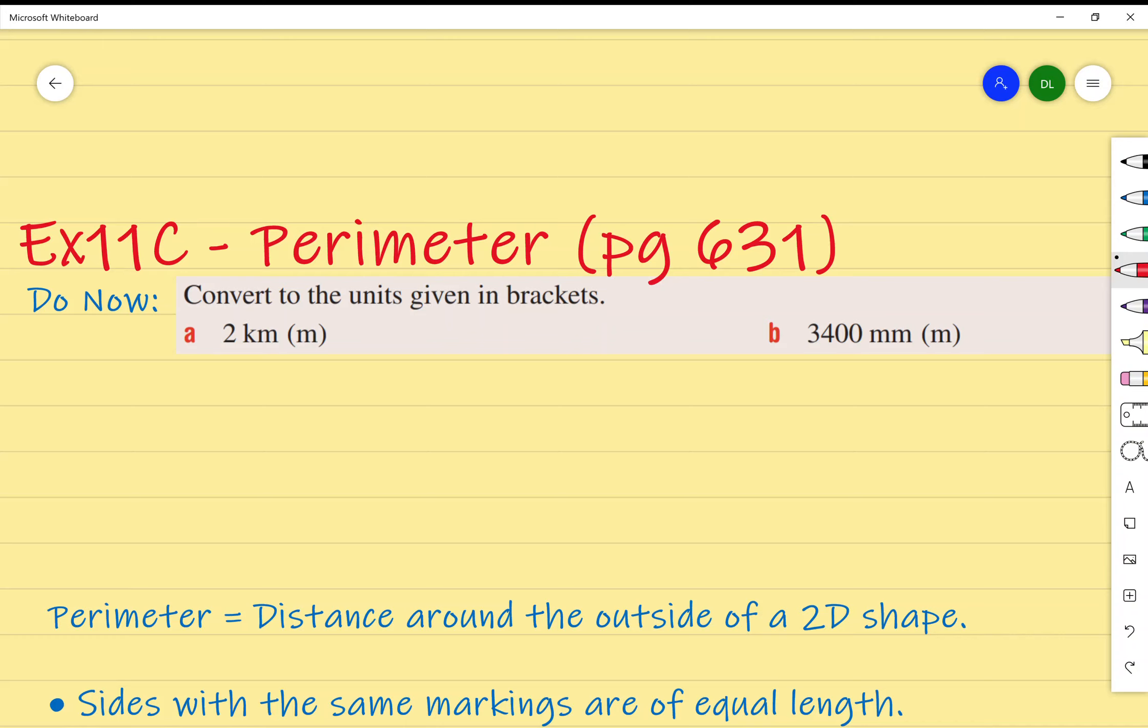Exercise 11C on perimeter, page 631 of your textbook. Last lesson we looked at exercise 11B, which is on the metric system, which is better than the imperial system. We're going to be converting between units of the metric system.